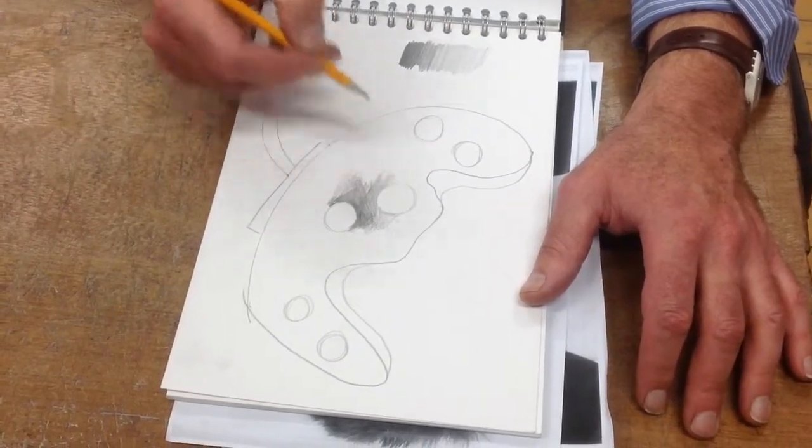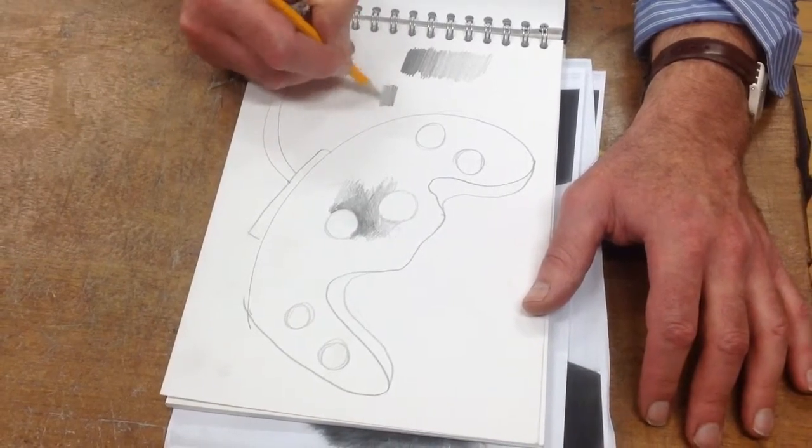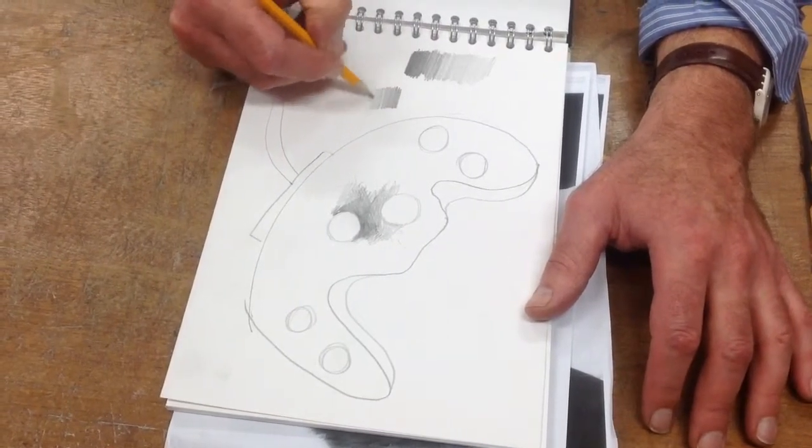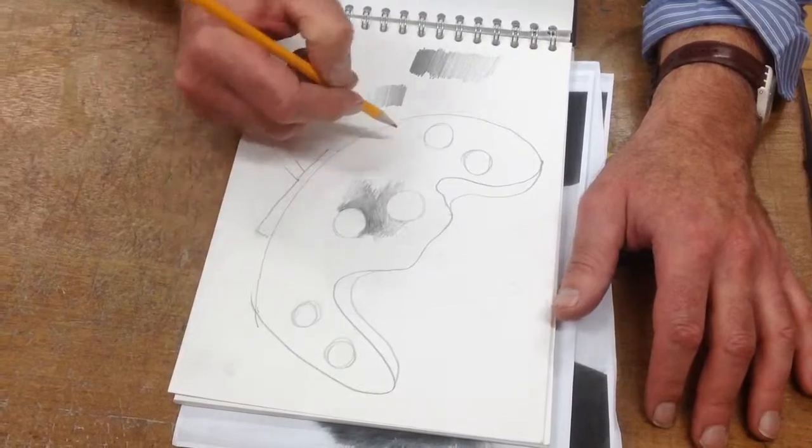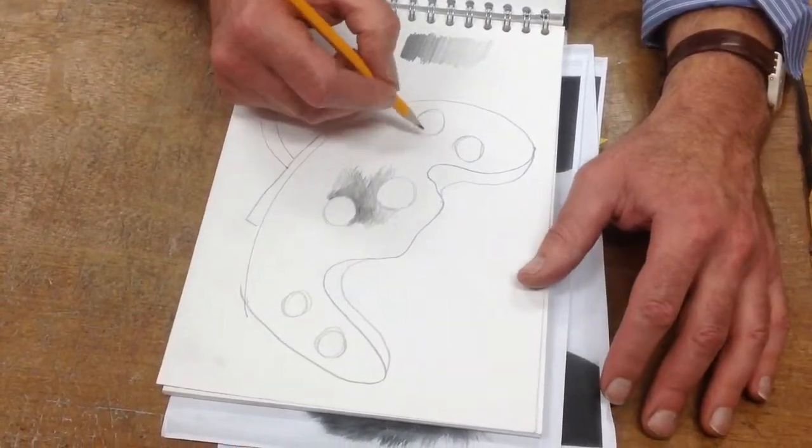Because in class what we're doing is we're looking at how you learn to shade, or how you use the pencil tone to give you the effect of 3D, how you can make something look round, how you can make things have shadows, have depth, all sorts of stuff.